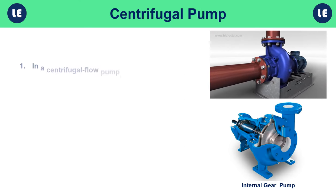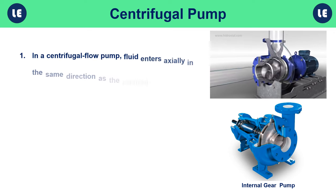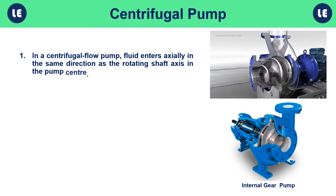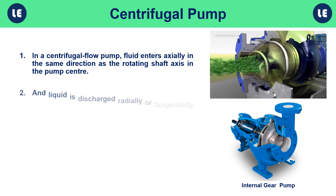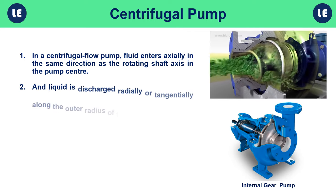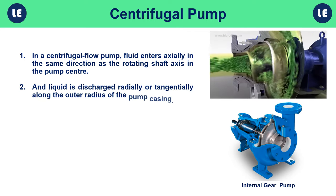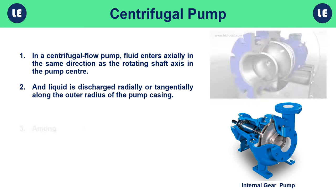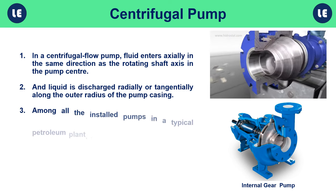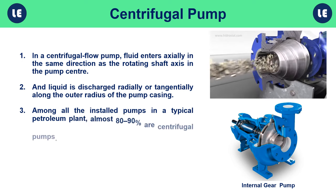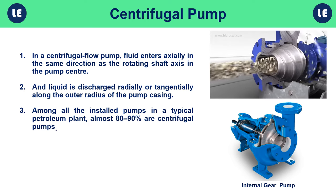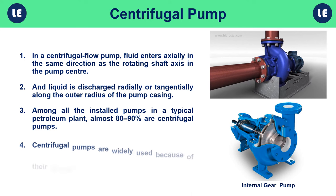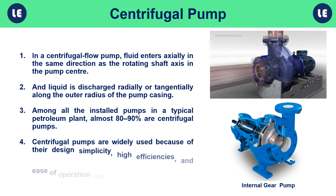In a centrifugal flow pump, fluid enters axially in the same direction as the rotating shaft axis at the pump center, and is discharged radially or tangentially along the outer radius of the pump casing. In a typical petroleum plant, almost 80–90 percent of installed pumps are centrifugal pumps, widely used because of their design simplicity, high efficiencies, and ease of operation and maintenance.